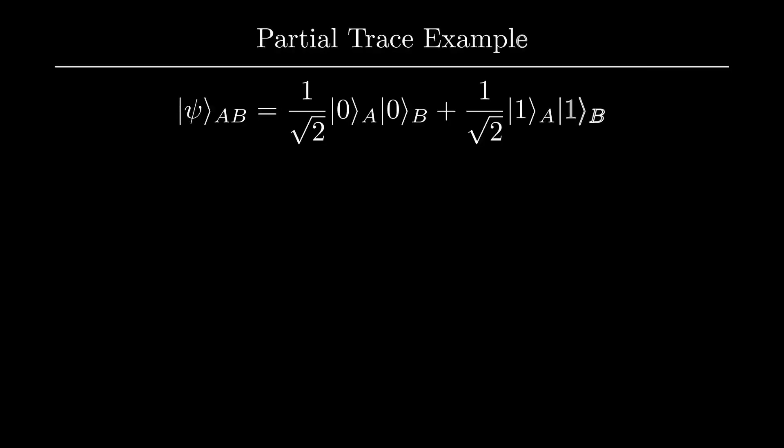Since this definition is kind of cumbersome, let's try a simple example. Let's go back to the familiar Bell State case. Here, what is the density matrix for A? Pause the video and work through this computation using the partial trace as we defined it previously.